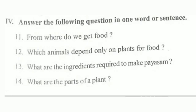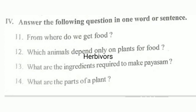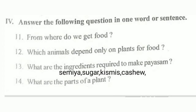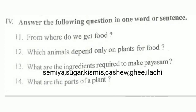Now answer the following questions in one word or sentence. From where do we get food? We get food from plants. Which animals depend only on plants for food? Herbivores.